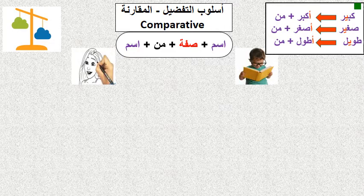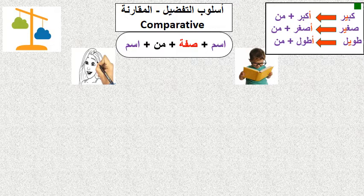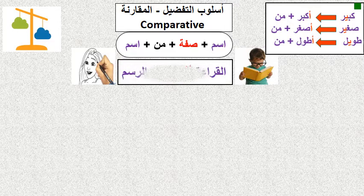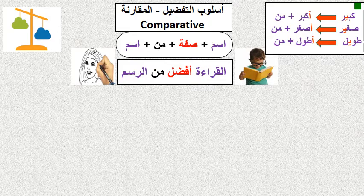Now look at these two hobbies. The first one on the right is reading — القراءة — and the second is drawing or art — الرسم. How to compare between two hobbies? Some students like reading more than art, or you like drawing more than reading. So: القراءة أفضل من الرسم — reading is better than drawing.